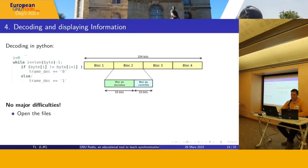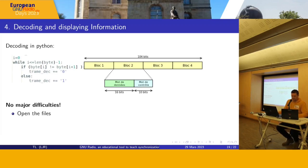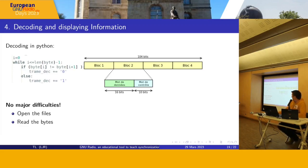Now to conclude the presentation, we will quickly show how to decode and display the information. Python post-processing is used to decode the differential Manchester encoding, extract the binary information, and display the corresponding text. Once the binary frame is obtained, it's not very difficult to extract the bytes corresponding to the data and convert them into text using the ASCII code. Doing all these operations, you can easily decode the frames and get the text information — just open the file, read the bytes, and read the documentation.